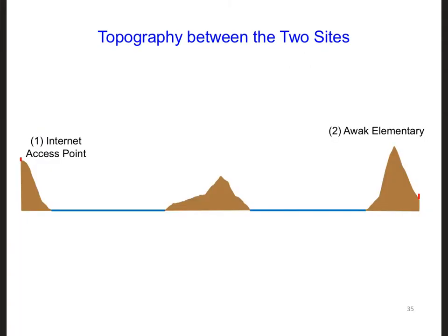Let's start by looking at the topography between the two sites. On the left is the Internet access point, and on the right is Awok Elementary. Something we can immediately see on the right side is that there is a big hill right in front of Awok Elementary. On this scale it looks more like a mountain, but it's just a hill.